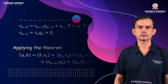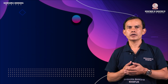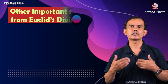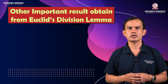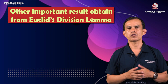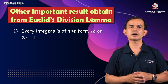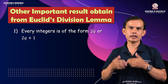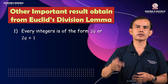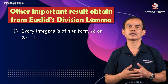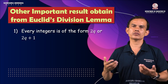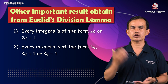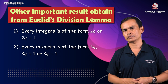Any integer is of the form 2q or 2q+1. So every integer is of the form 3q, 3q+1, or 3q−1.